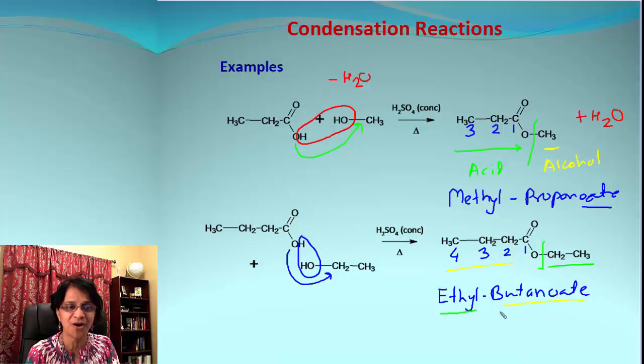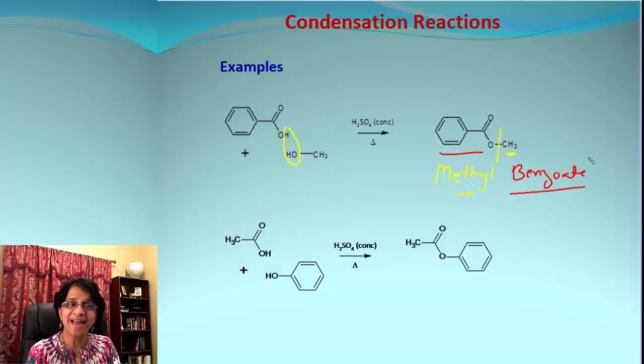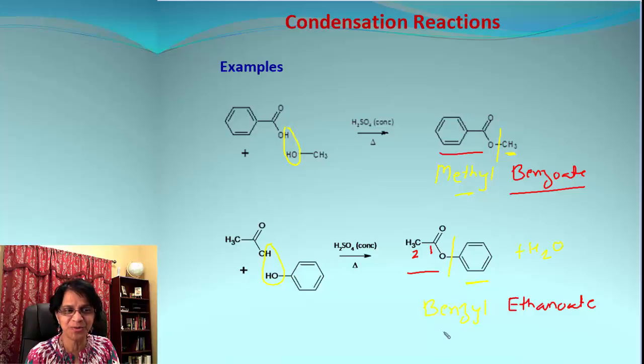Let's work on two more examples. This is benzoic acid and that's methanol. See what happens? We remove that water molecule from there, we get an ester, and we name that as methyl benzoate. The next reaction looks similar but look at the groups, they are switched. So there comes the water molecule and look at the final product, that is the benzyl group here.